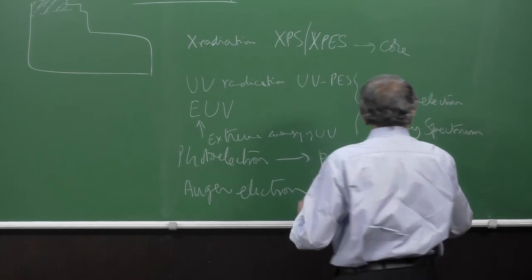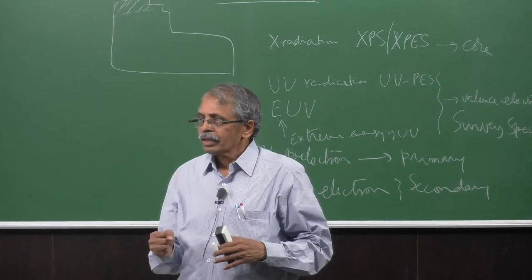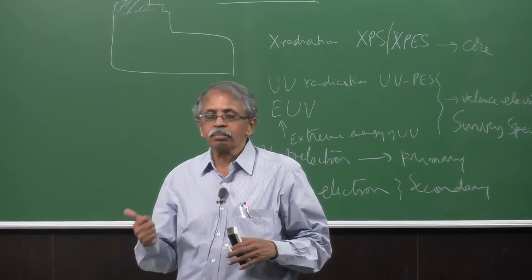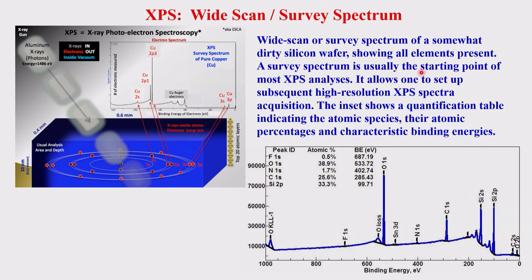The survey spectrum gives the whole surface composition — all atomic species, all molecular species present. What you measure is kinetic energy; what you use is binding energy, obtained by subtracting kinetic energy from the total energy supplied. The peaks are identified by their known binding energy ranges: carbon 1s, carbon 2s, silicon levels and so on. The 1s level has greater binding energy than the 2s because it is deeper — that is consistent with known energy level ordering.